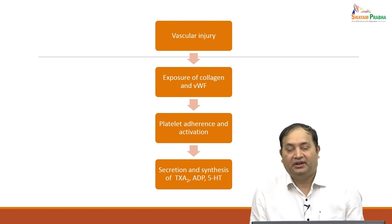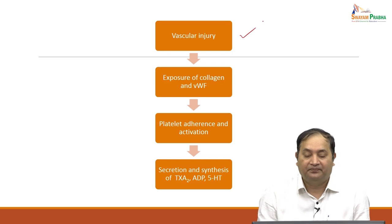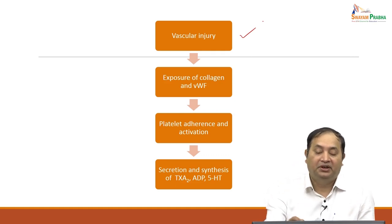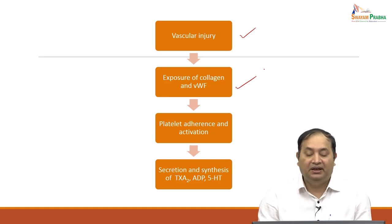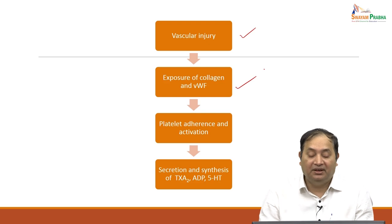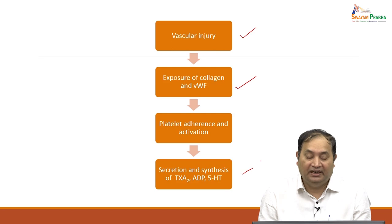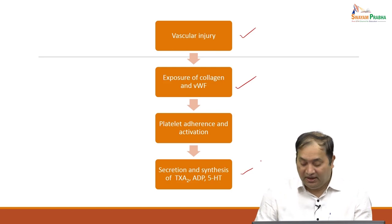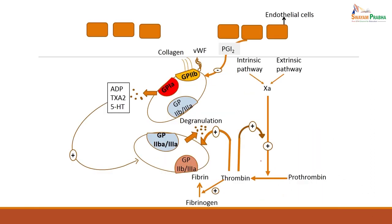In more detail, hypothetically if there is a vascular injury, there is exposure to collagen and VWF, and the factors get activated. This helps in platelet adherence because platelets get activated, form pseudopods, and there is activation of platelet. Ultimately there is increased synthesis of thromboxane, ADP, or 5-hydroxytryptamine, and altogether coagulation begins. Going into the molecular aspect, the coagulation pathway has intrinsic and extrinsic pathways where factor 10A is activated, helping conversion of prothrombin to thrombin, and thrombin helps convert fibrinogen to fibrin, forming the clot.